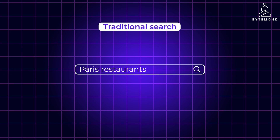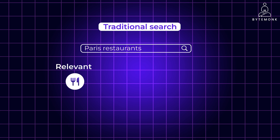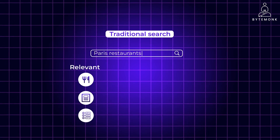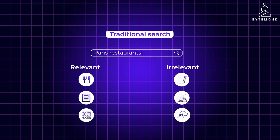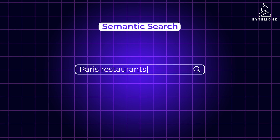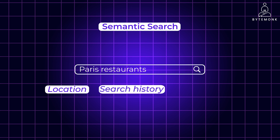Imagine you search for 'Paris restaurants.' A traditional search engine will most likely scan websites for pages containing the words 'Paris' and 'restaurants' and return a mix of relevant and irrelevant results. Relevant results may include restaurant listings, blog posts about dining in Paris, or reviews of specific restaurants. Irrelevant results might include travel articles, historical information about cuisines, or even a news article about a lost dog named Paris. A semantic search engine, by contrast, understands your intent is to find places to eat in Paris. It considers your location, search history, and the current time to prioritize nearby restaurants that match your preferences — such as French cuisine or fine dining — and returns a curated list relevant to your needs.